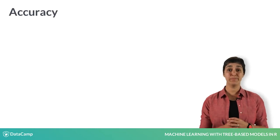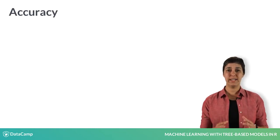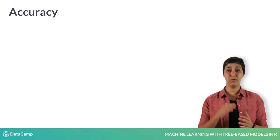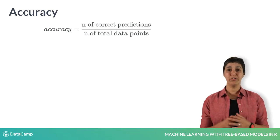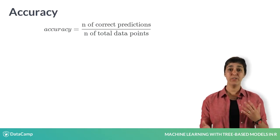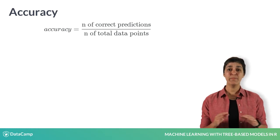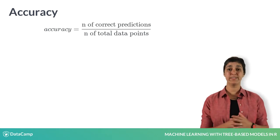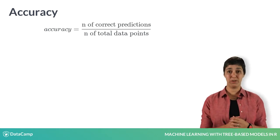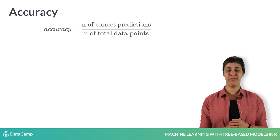Accuracy measures how often the classifier predicts the class correctly. It is defined as a ratio between the number of correct predictions and the total number of rows in the data. Even though it is easy to calculate, it makes no distinction between classes — correct answers for both classes are treated equally, and sometimes this is not enough.